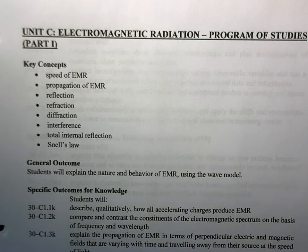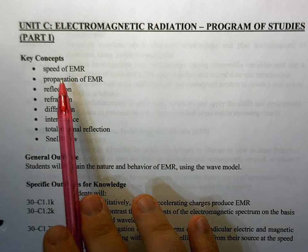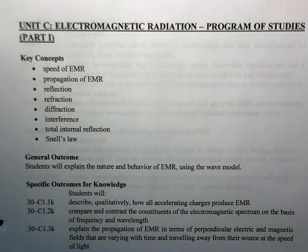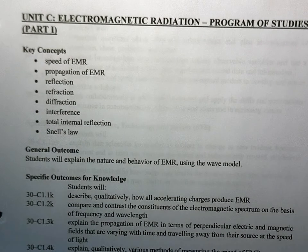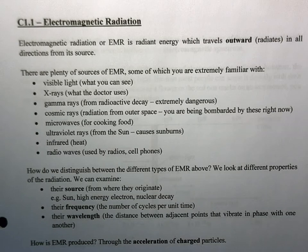The first part of this unit, which is where we're going to spend the bulk of our time, we're going to look at things like the speed of electromagnetic radiation, propagation of electromagnetic radiation, reflection, refraction, diffraction, interference, total internal reflection, and Snell's Law. So what we want to look at for the next little while is the wave nature of electromagnetic radiation. With that said, let's get into it.